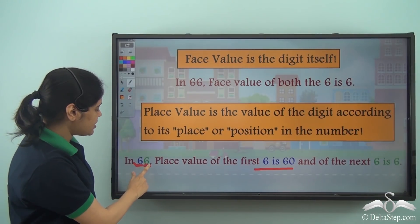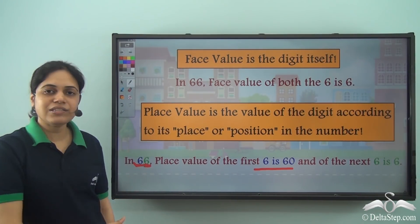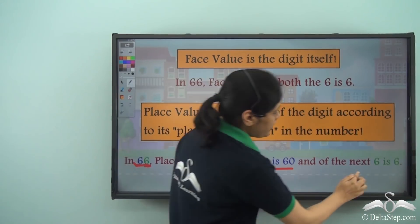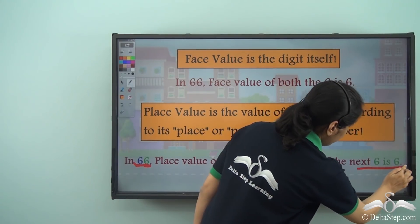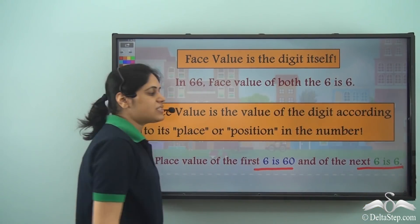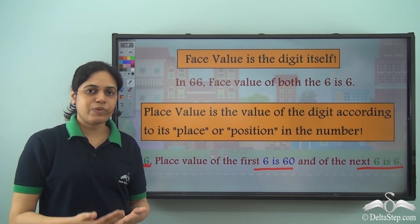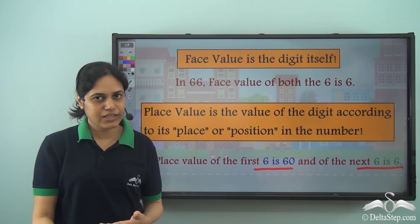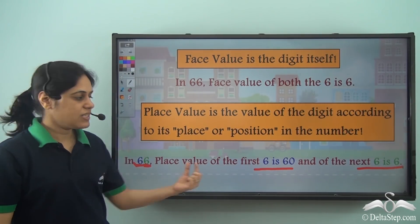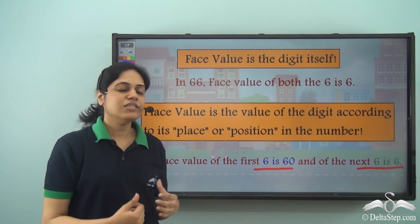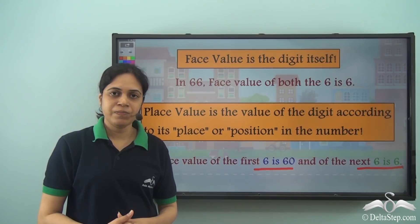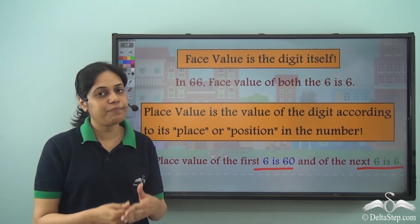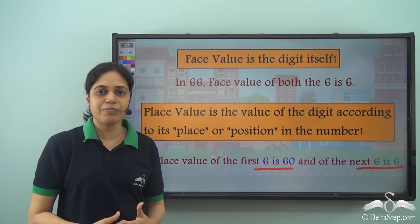Whereas this 6, the second 6, is in the ones place. So the place value of the second 6 is 6, because 6 ones is 6. 6 tens is 60. So this is how we find the face value and place value of numbers.